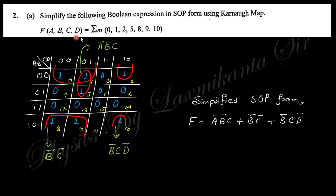The given expression is to be simplified using a K-map. Write A, B and C, D in the order 0 0, 0 1, 1 1, 1 0 — remember this order. The numbering goes 0 1 2 3 for the first row, then 4 5 6 7 8 9 10 11 12 13 14 15. Place the ones at positions 0, 1, 2, 5, 8, 9, 10, then group them into groups of one, two, four, eight, or sixteen ones. These four ones form one group.